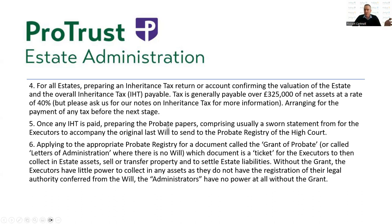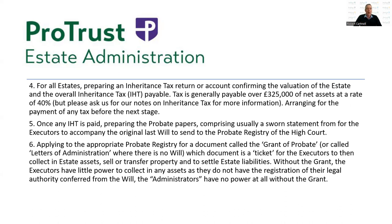The probate papers comprise an application to the court — to the division of the court called the district probate registry. We generally organise people to file at Oxford or Newcastle registries, as they seem to be the most efficient. Once the application is completed, it seems to be taking at the moment three to four months to come back from the probate registry with a sealed document called a grant of probate, or letters of administration where there is no will or where there's an attorneyship. The grant is effectively a ticket or certificate for the executors to then collect in the assets, sell or transfer property, and pay off the estate debts. Without the grant, executors may only have very limited powers to deal with some small assets.